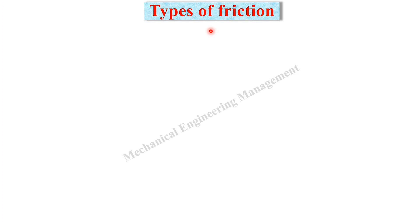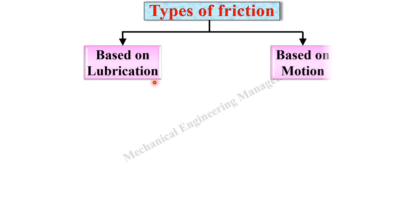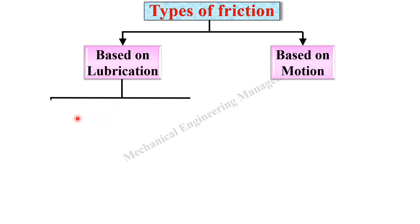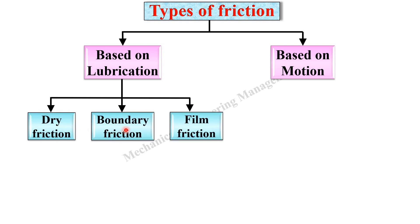Let us see the types of friction. Basically there are two approaches to classify friction. First, based on lubrication you can classify friction as dry friction, boundary friction, and film friction. Second, based on motion you can also classify friction.